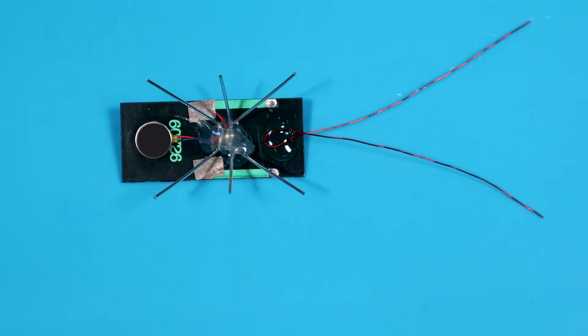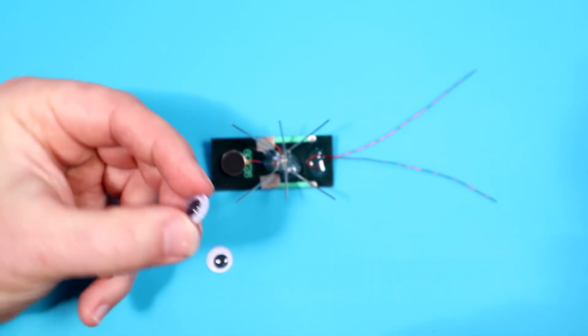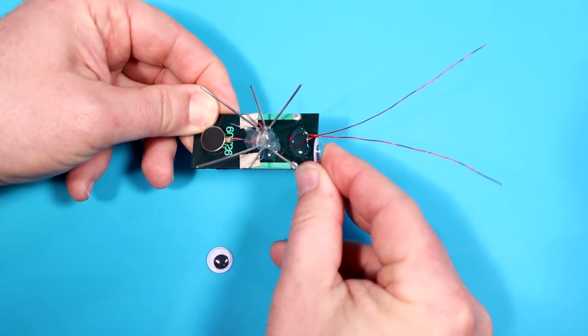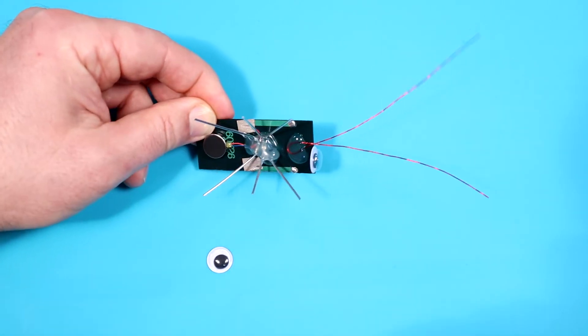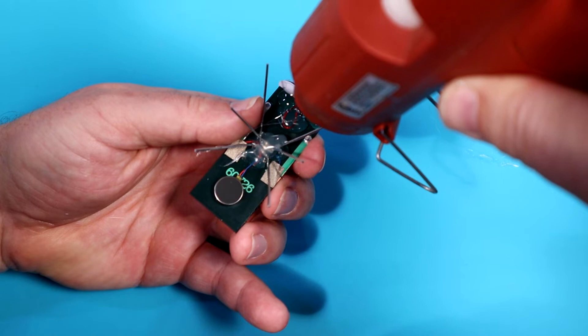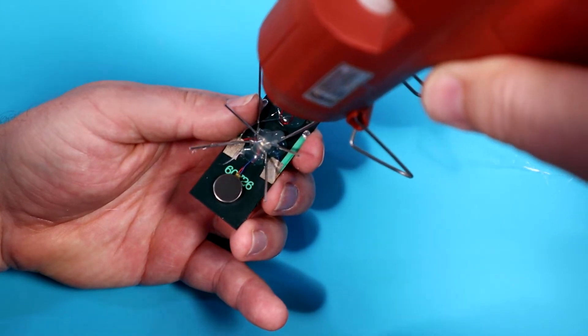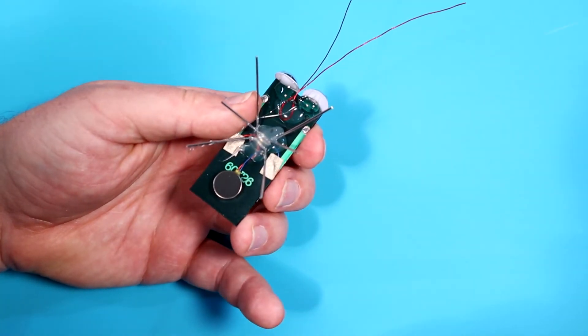Now it's time to place the googly eyes. Peel the backing off of the self-adhesive googly eye and stick it against the front of the solar cell next to the antenna. This isn't a lot of surface area, so use some hot glue to make sure the eyes stay in place.